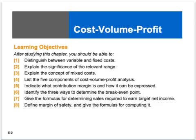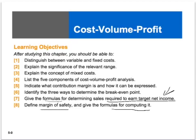This is the fourth video in the chapter on cost volume profit. In this video we are looking at the formulas needed to figure out how much sales we need to earn a target net income, and also what the margin of safety is and how we calculate it.